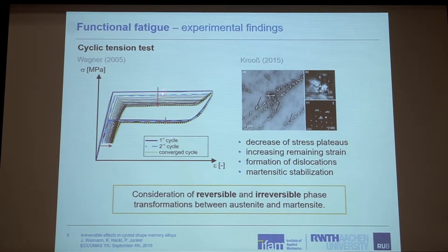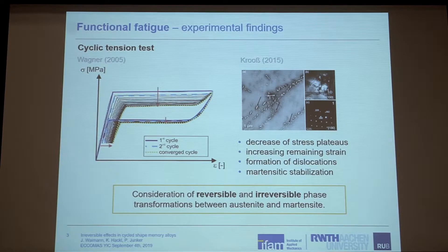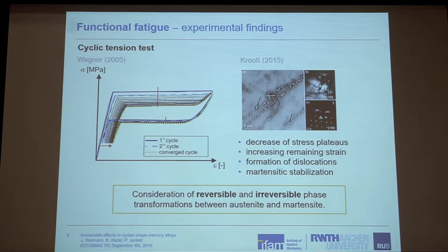Particularly for the upper plateau, we also have the formation of a remaining strain. The reason for that is given by Kroos. He examined the structure of shape memory alloys and showed that we have a formation of dislocations during the transformation. These dislocations are stabilizing the martensite, so the martensite is not able to transform back. That is something we wanted to model, so we included the reversible transformation from austenite to martensite and coupled it with an irreversible transformation.